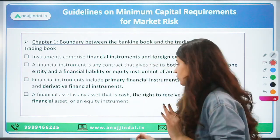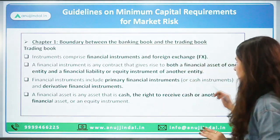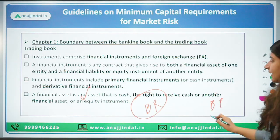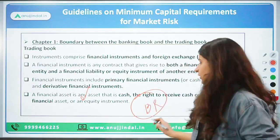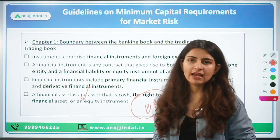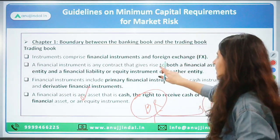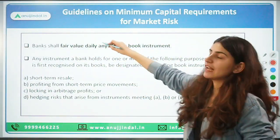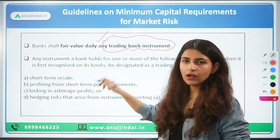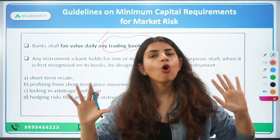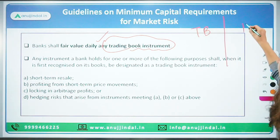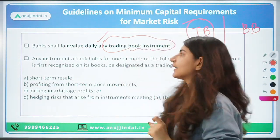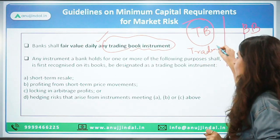Financial instruments involve primary financial instruments or cash instruments, and derivative financial instruments. Derivative instruments include options, forwards, futures, and swaps. Banks have to maintain a fair value of these financial instruments. These instruments will either go in the trading book or the banking book. In the trading book come securities, investments, or financial instruments wherein trading is supposed to be done — meaning they are supposed to be sold or bought for resale to earn profit.